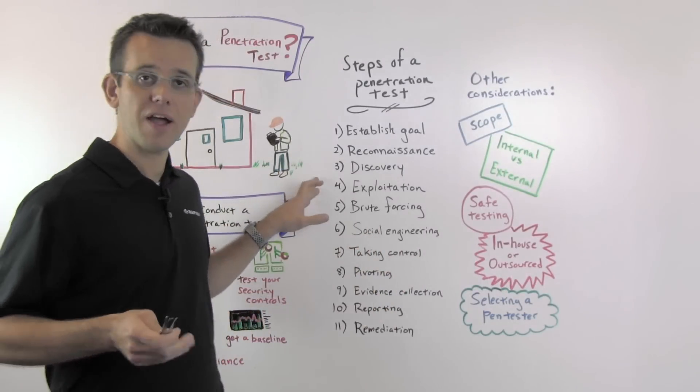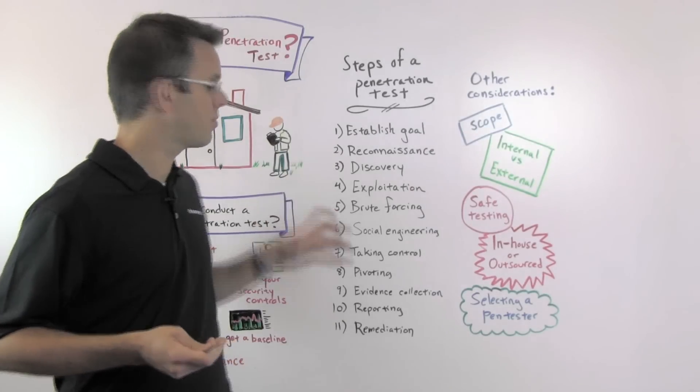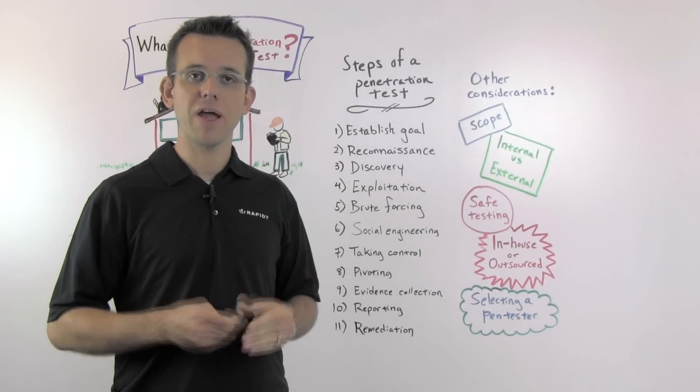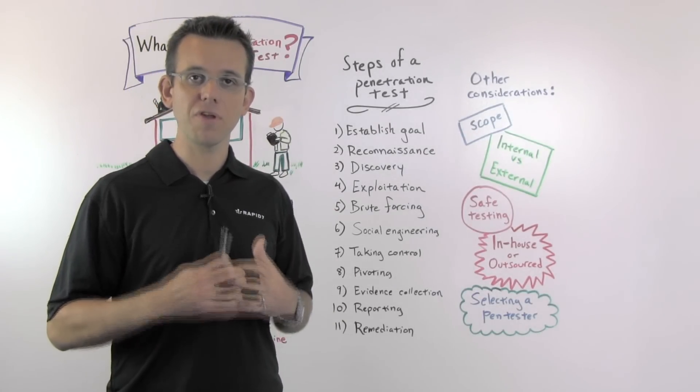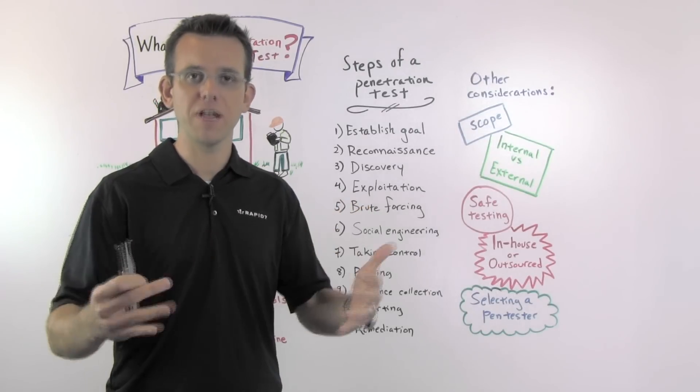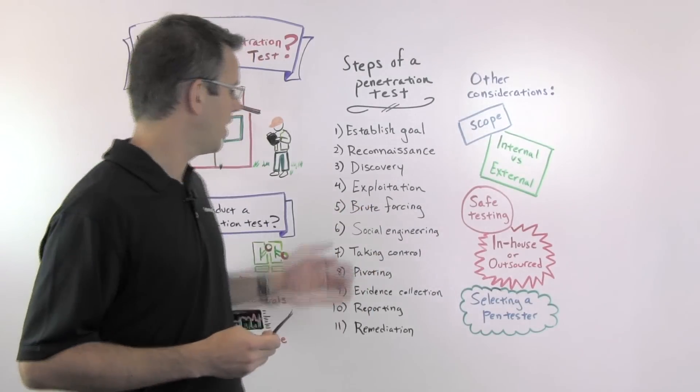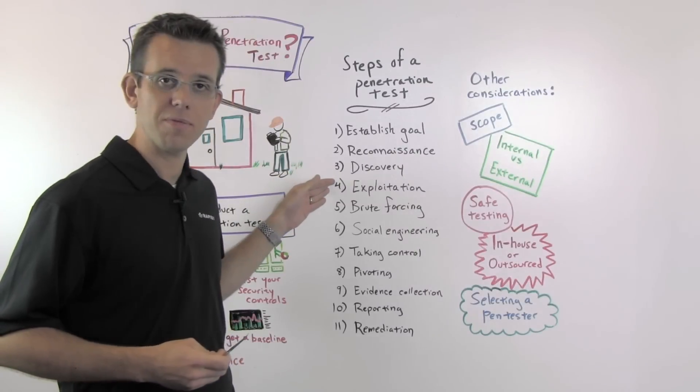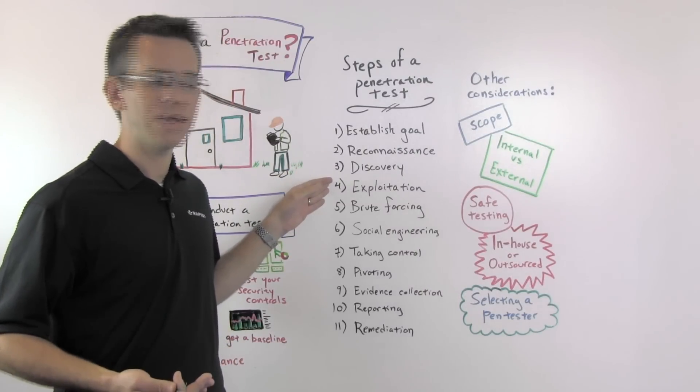And then you start the actual intrusion. So you start with exploitation. That means you're actually using little pieces of software to exploit vulnerabilities in the network and to take control over systems. There are also some other ways to get into the systems.